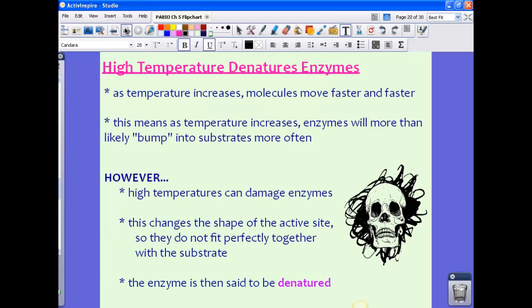So I mentioned in those six characteristics that high temperature kind of changes or makes enzymes inactive. Well this is something that we call denature. So high temperature denatures enzymes. Now as temperature increases, molecules move faster and faster. Remember, this is just a basic particle movement of all things. As temperature rises, the particles are going to try to move faster and faster.